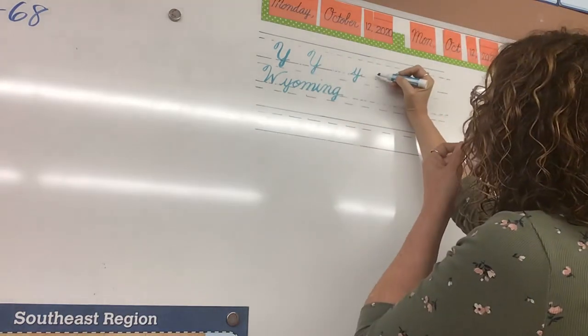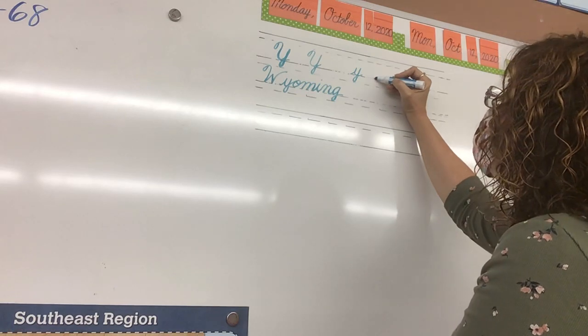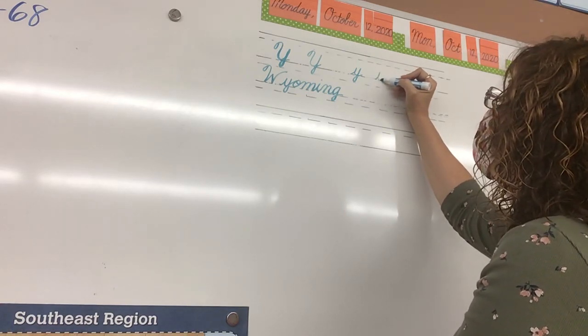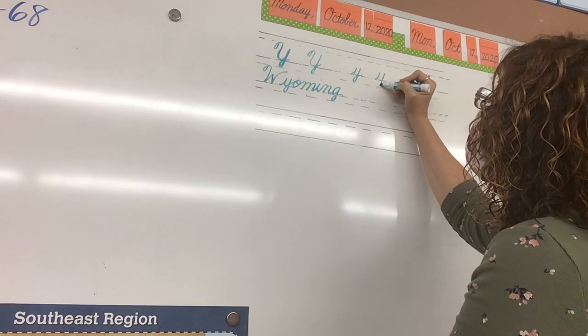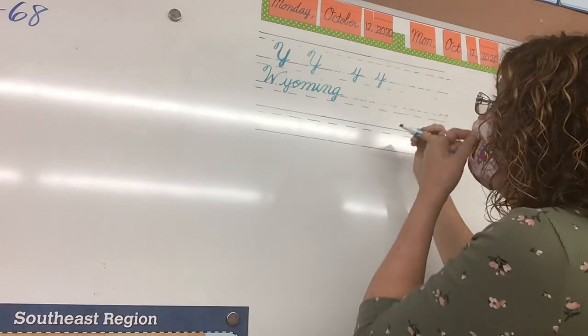For lowercase y, it is just like lowercase u. You go up the driveway, back down the driveway, curve on the floor, up the driveway, back down the driveway, and another little skinny tail.